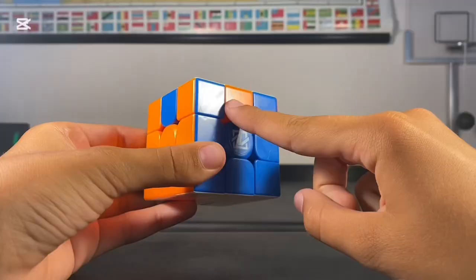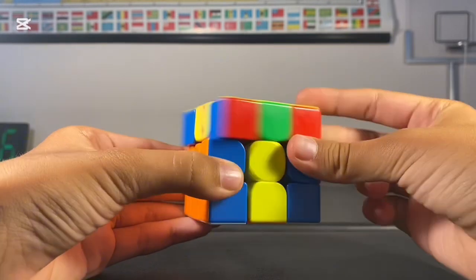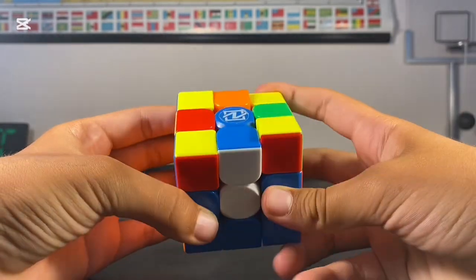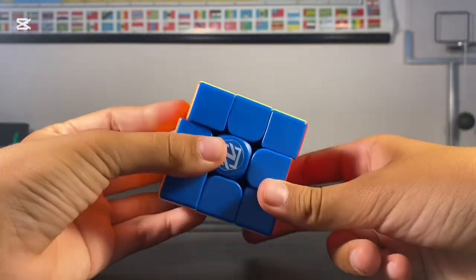And the last case is when the edges are swapped with their opposite ones next to them. The algorithm is M prime U-M-2-U-M-2-U-M prime U-2-M-2.